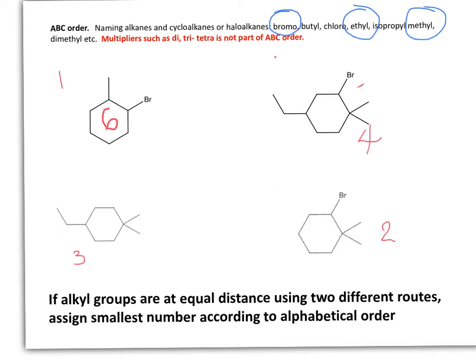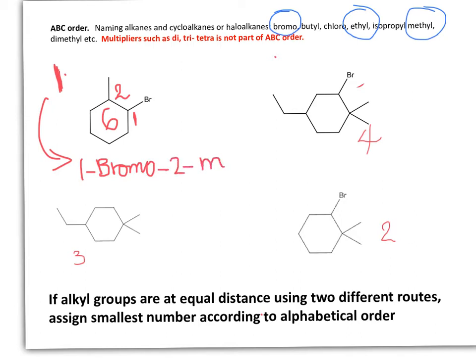I have two choices: I can assign carbon 1 and 2 in either direction. The right way is to assign the smallest number to the atom that comes first in the alphabet, and that will be the atom of bromine. So this will be carbon number 1 and this one is carbon number 2. The name of the first structure is 1-bromo-2-methylcyclohexane.